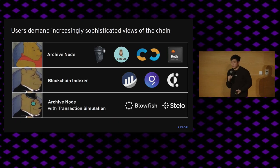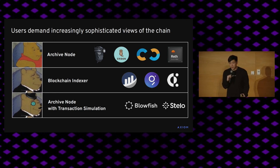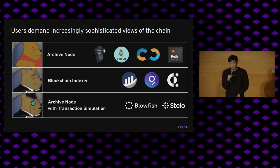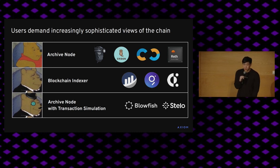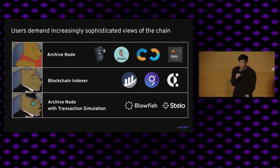As the ecosystem has developed, users demand increasingly more sophisticated ways to actually understand this information. At the most basic level, you have archive nodes that provide answers to JSON RPC queries — you can choose Geth, Aragon, Nethermind, and soon probably Reth. But as users use more sophisticated on-chain applications, they want to understand what the raw data they're querying actually means. For that, you would turn to an indexer like Etherscan, the Graph, or Covalent.